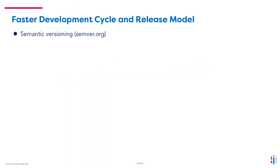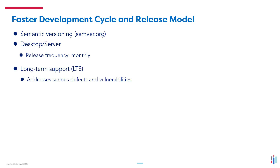Data360 Analyze has semantic versioning — please visit semver.org for more information. Both the desktop and server versions have releases on a monthly basis. Long-term support releases will address serious defects and vulnerabilities, and will be released every six months. In terms of which releases are supported, it is the current release plus the last release. The initial long-term support release was version 3.2.0.